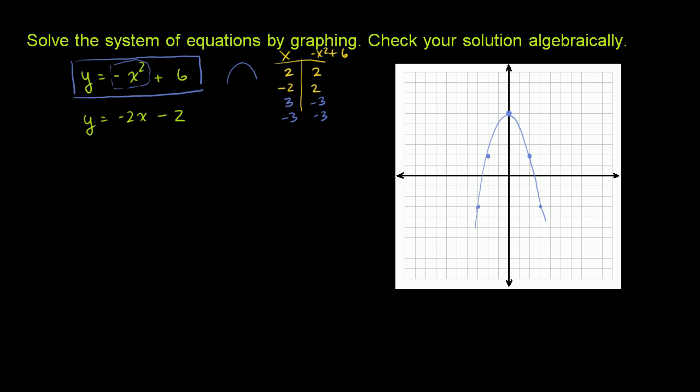Now let's graph this second one over here. y equals negative 2x minus 2. This is just going to be a line. It's a linear equation. The highest degree here is 1. So our y-intercept is negative 2.